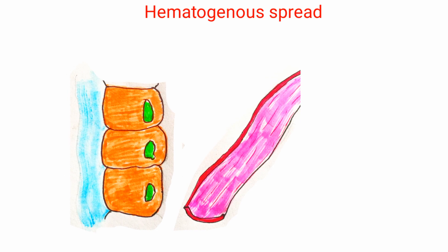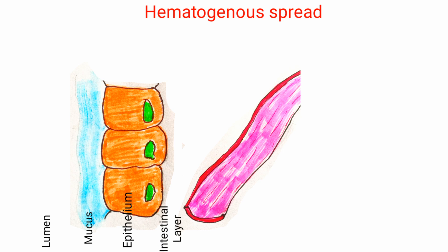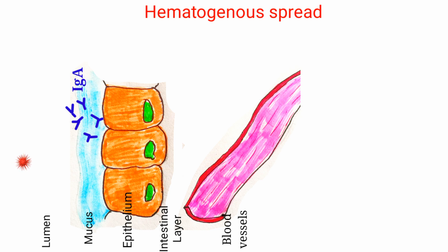Let's create a scenario of hematogenous spread to look at the pathophysiology of this disease. Here is the lumen — the nose, gut, or lungs — here is the mucus, this is the epithelium, and under the epithelium is the interstitial layer, and then you have your capillaries — basically your blood vessels — which circulate all around your body. The lumen is obviously the access point of the bacteria. The bacteria have the ability to break down host antibodies using IgA protease, which breaks down the mucosal antibody IgA.